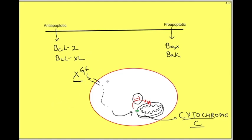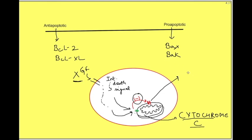A second signal that can occur: when there is DNA damage or endoplasmic reticulum damage, sensors in the cell detect this intracellular death signal, which again acts on these proteins and decreases the inhibition of pro-apoptotic proteins. When the check on these pro-apoptotic factors is removed, they form dimers that act as a channel inserted into the outer membrane of the mitochondria, causing cytochrome C to leak out into the cytosol.